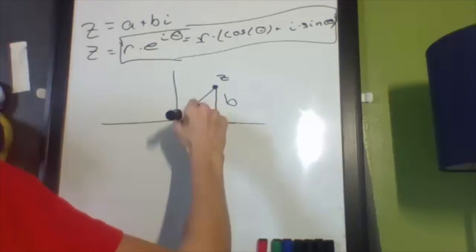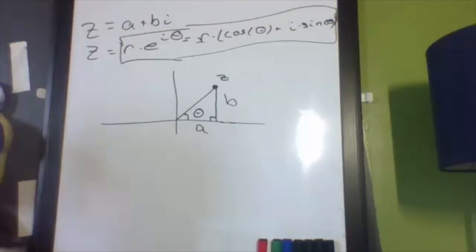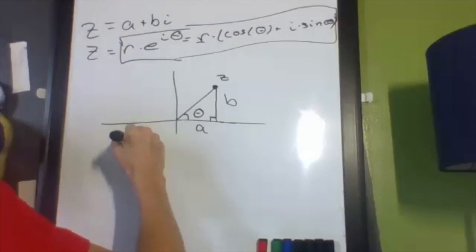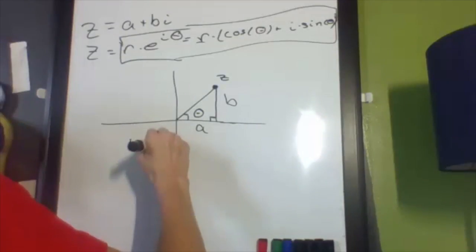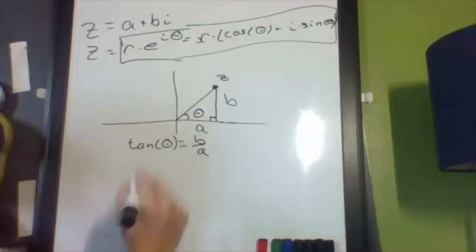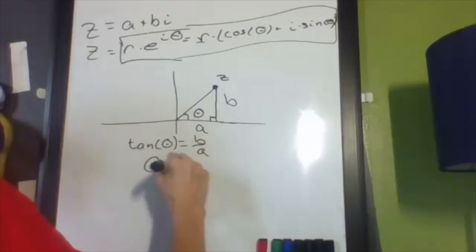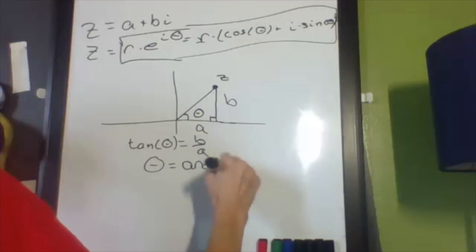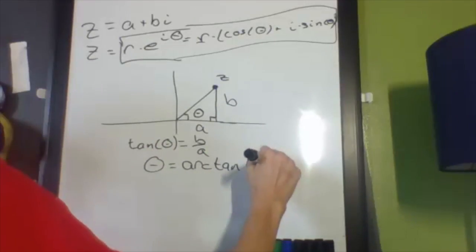So, say this angle is theta right there. What do we know about it? Well, we know that tangent of theta is equal to b over a, right? Opposite over adjacent. Then, I get theta is going to be the inverse tangent of b over a.